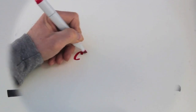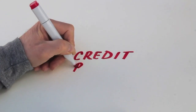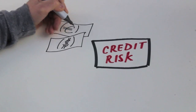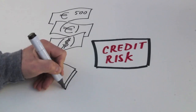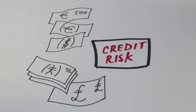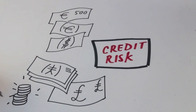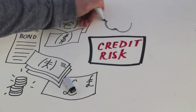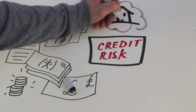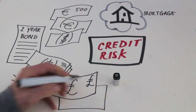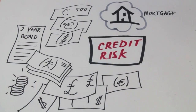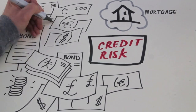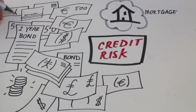Credit Risk is one of the fundamental risks for banks and companies, together with Market Risk and Operational Risk. Imagine we hold a portfolio of loans or securities. A good definition of Credit Risk is the following: Credit Risk is the risk that the value of our portfolio varies because of the unexpected changes in the credit quality of trading partners or issuers.